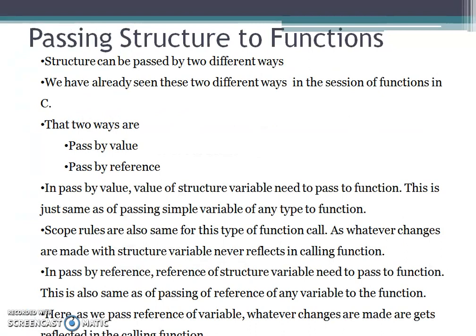Next, we'll study passing structure to functions. A structure can be passed in two different ways: pass by value and pass by reference. In pass by value, the value of a structure variable is passed to the function, just like passing a simple variable of any type. The scope rules are also the same — whatever changes are made to the structure variable in the called function never reflect back in the calling function.